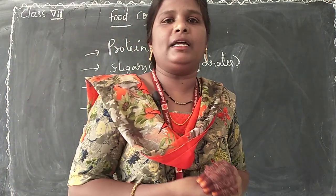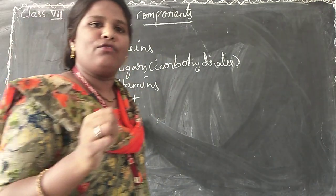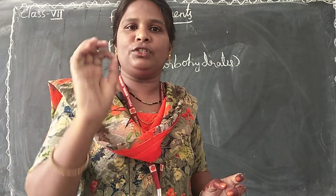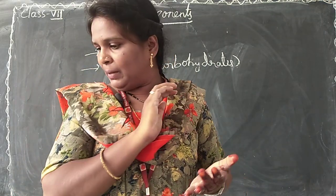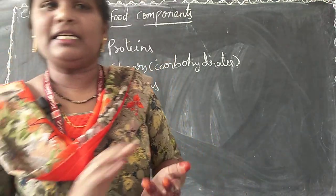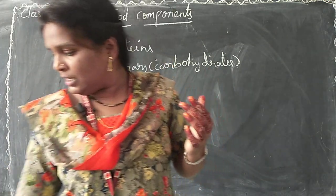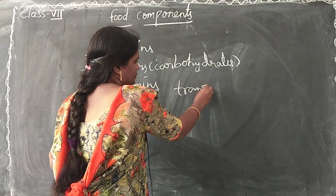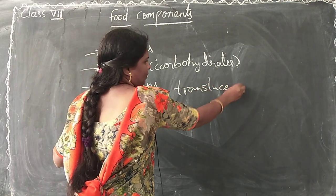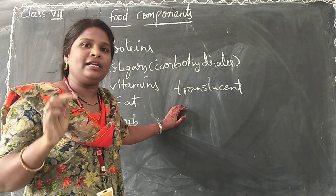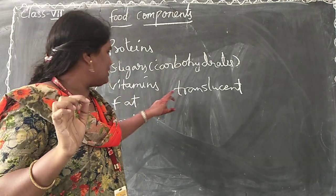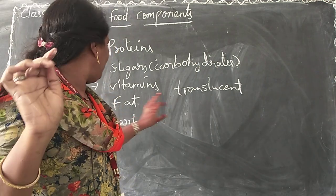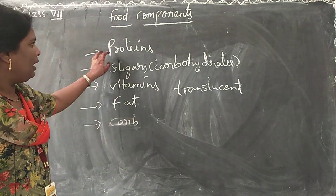Next one is fats. How do we know fats are present in a food component? For that, we should take some oil and place that oil on paper. If it is translucent, we can conclude that fats are present in the food component.